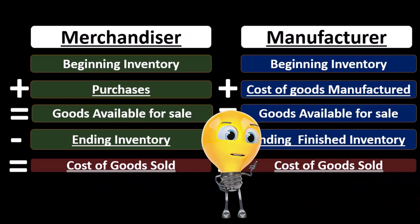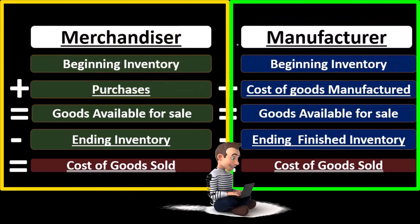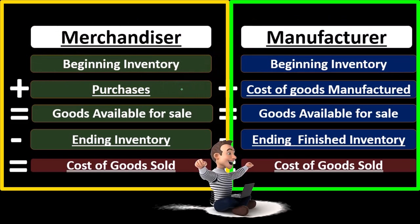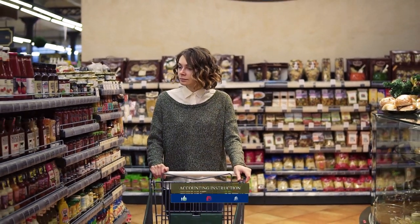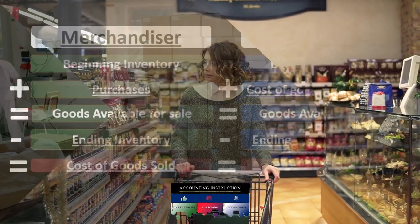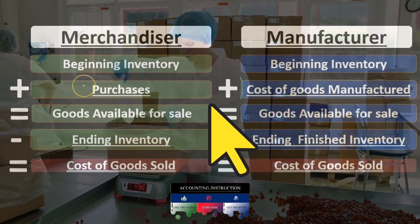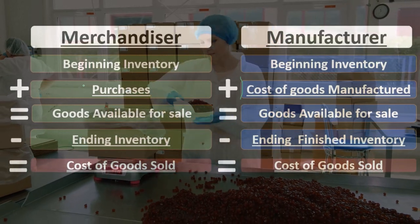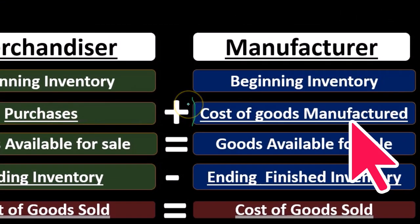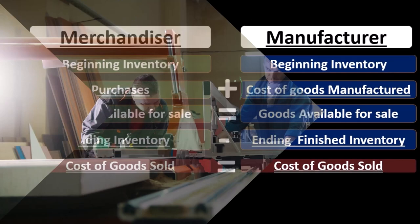Remember that the major difference between the cost of goods sold calculation for a merchandiser — a company that purchases and sells inventory — and a manufacturer — one that makes the inventory — is that a merchandiser has a purchases item where they simply purchase the inventory, while the manufacturer is going to have the cost of goods manufactured. For the manufacturer, the cost of the goods we make is going to include more than just raw materials; it's going to include things such as direct labor and overhead.